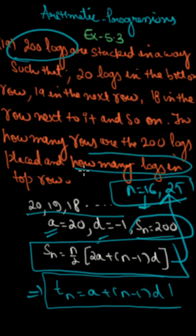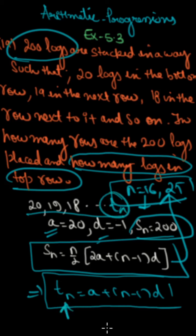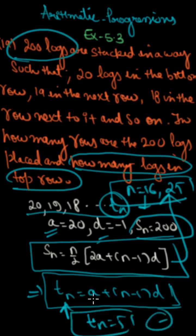How many logs are in the top row? We need to find Tn, the last term. When you put n equals 16, the value is 5. But when you put n equals 25, it will be negative, which is not possible. So the valid value is Tn equals 5 when n equals 16.